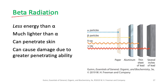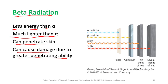Beta particles have less energy than alpha particles but are much lighter, giving them much greater penetrating power. Beta particles can penetrate the skin and cause damage due to their greater penetrating ability. A thick sheet of aluminum is required to stop them.